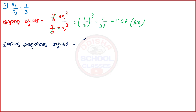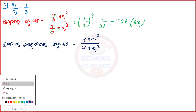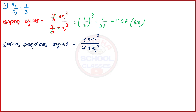4πr2 squared. 4πr1 squared by 4πr2 squared. So we have 4πr1 squared by 4πr2 squared: r1 by r2 squared means 1 by 3 squared. So 1 by 9. That's the answer.